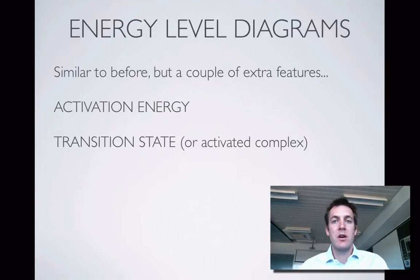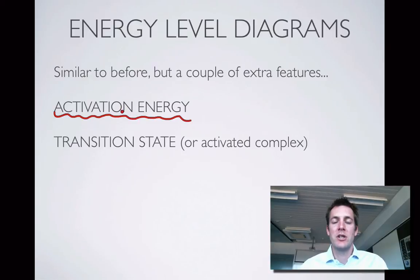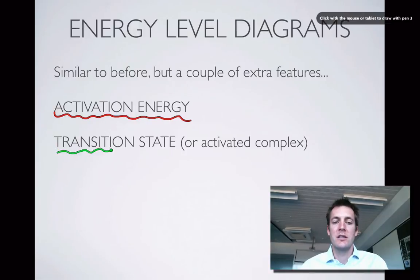The energy level diagrams we're going to look at will be quite similar to the ones we've seen before, but there are a couple of extra features. The first is activation energy — how much energy you need to activate a reaction, or in other words, how much energy we need to put in to get a reaction started. The second is something called a transition state, which some people call an activated complex — they're the same thing.